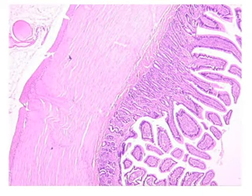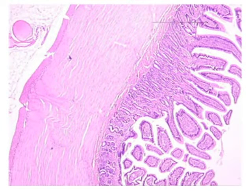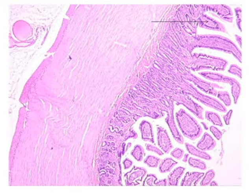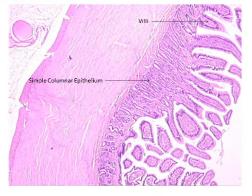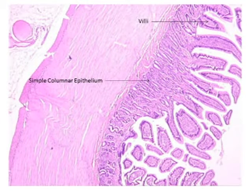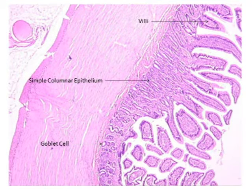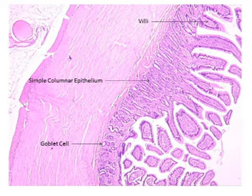Next is the small intestine duodenum. The first thing is the villi — the villi are the things that stick out from the other tissues. Next is the simple columnar epithelium, which is the layer at the base of the villi. You also have the goblet cells, which are the white circular areas with a white space in the middle.